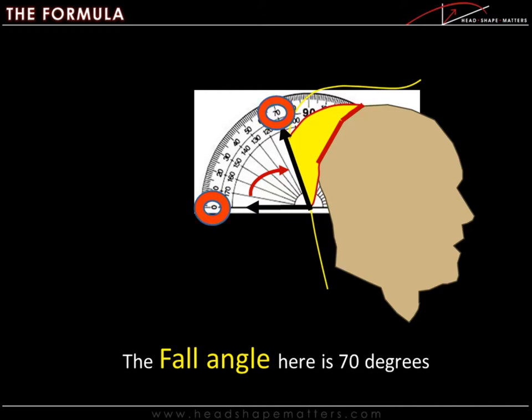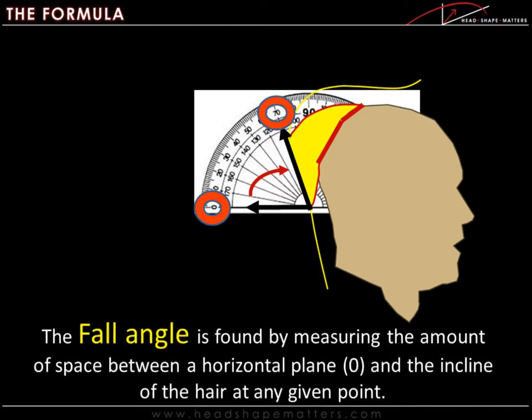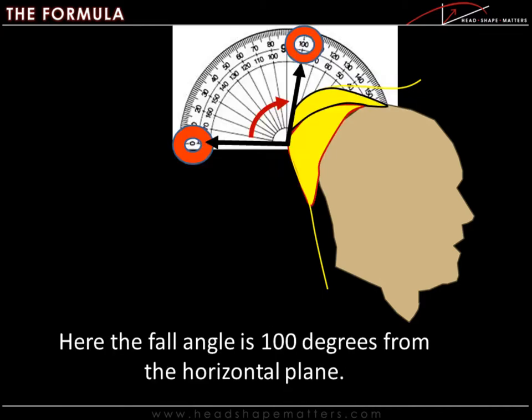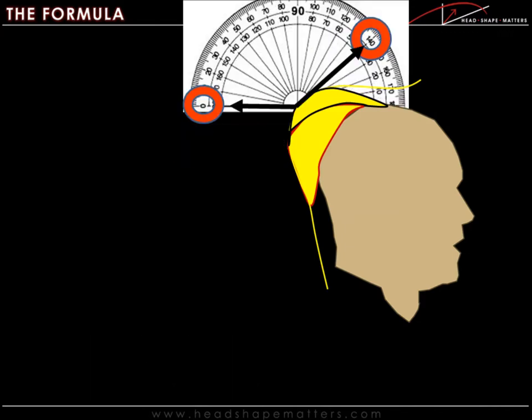This yellow section of hair is falling into 70 degrees. Fall angles are found by measuring the amount of space between the horizontal plane and the incline of the hair at any given point. Here the fall angle is 100 degrees from the horizontal plane, and here 140 degrees from the horizontal plane.